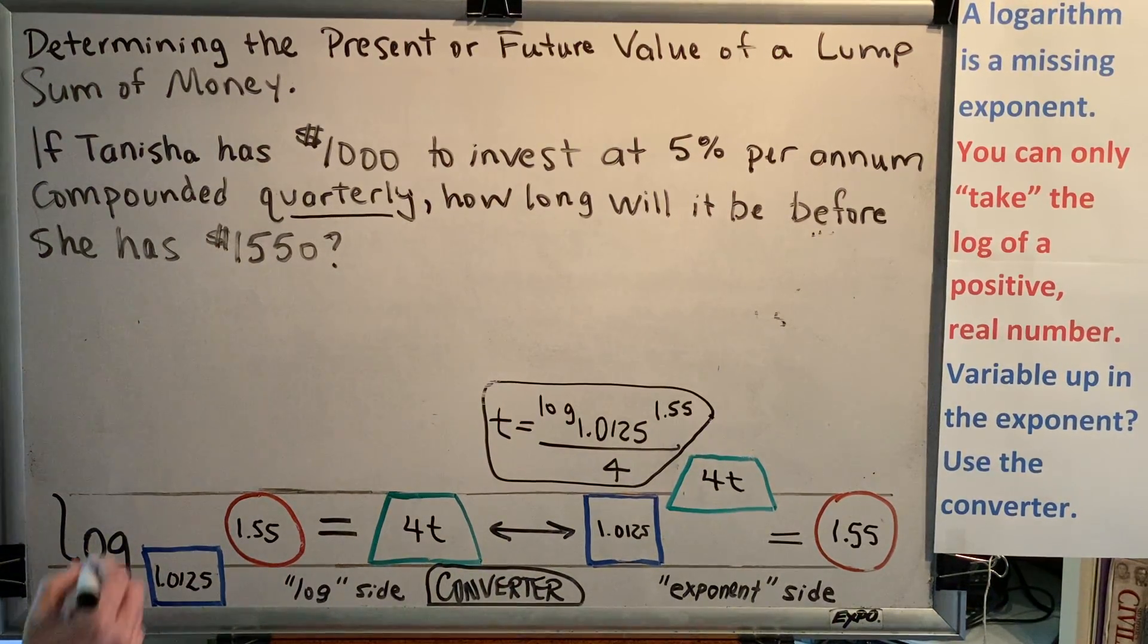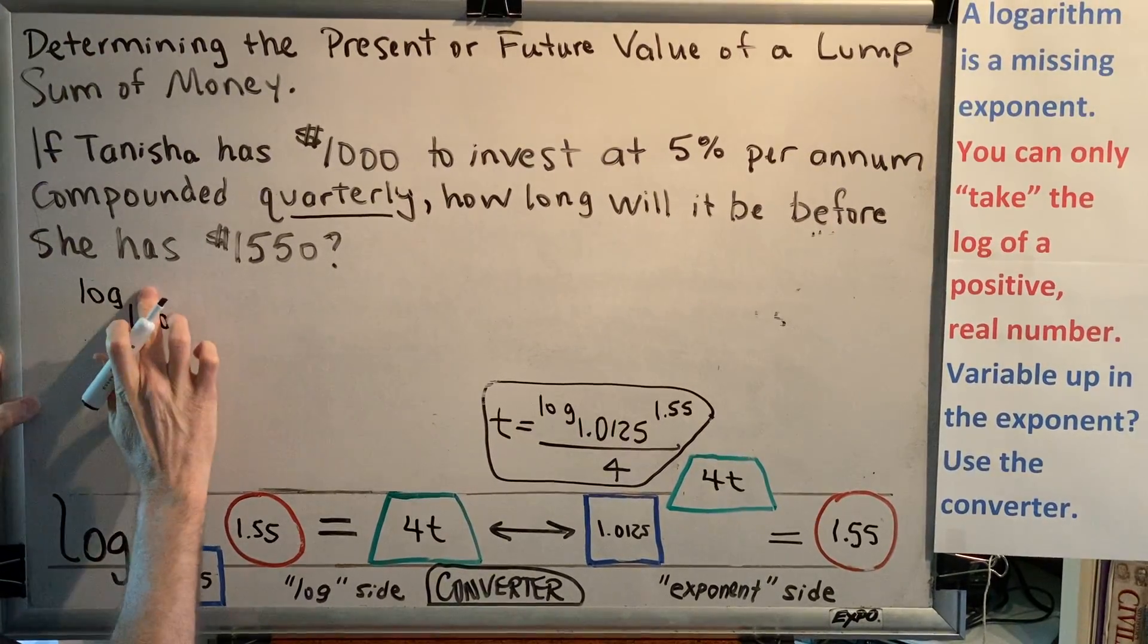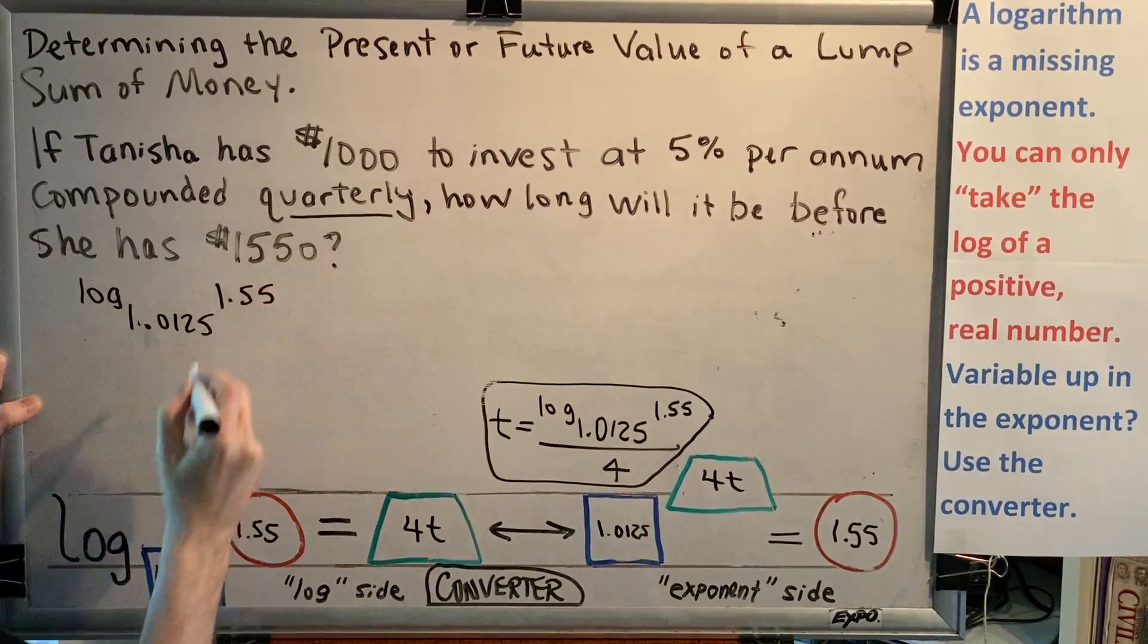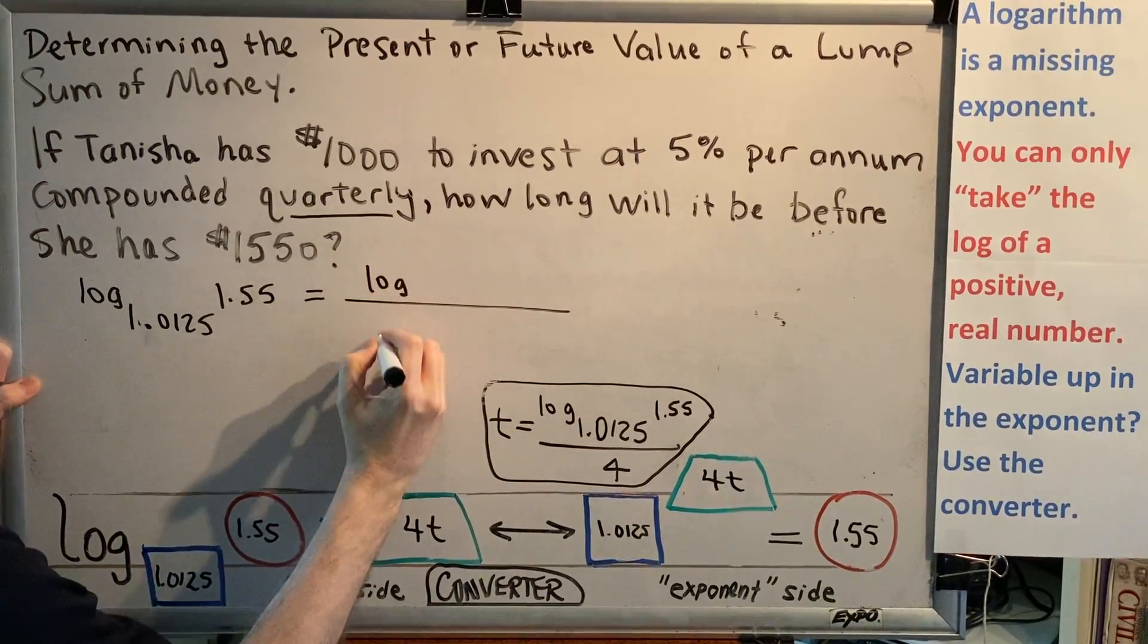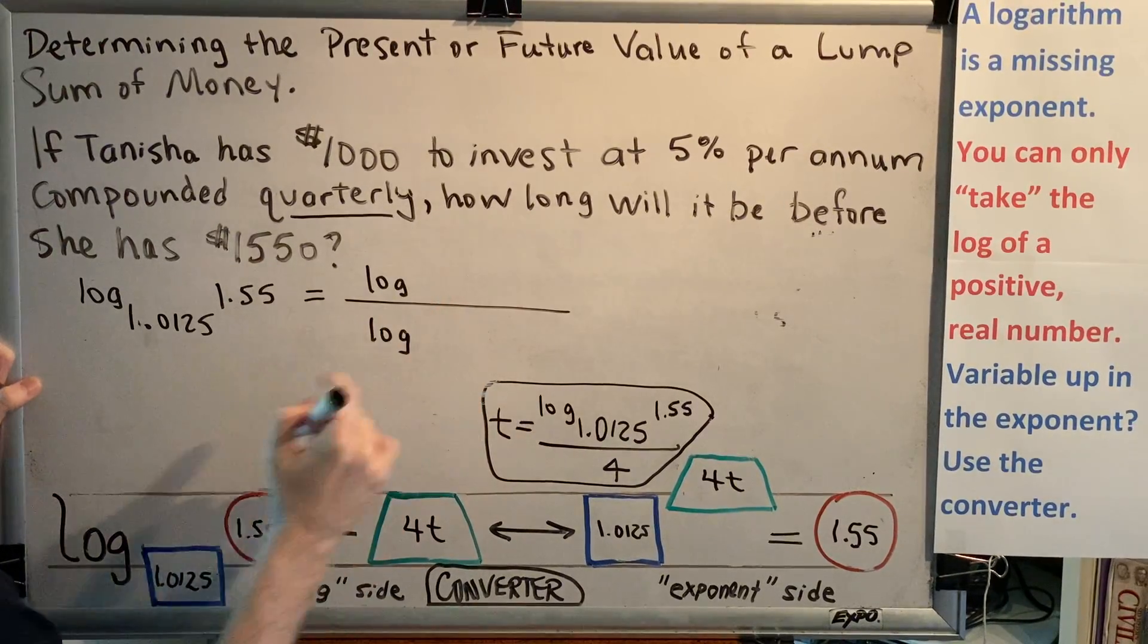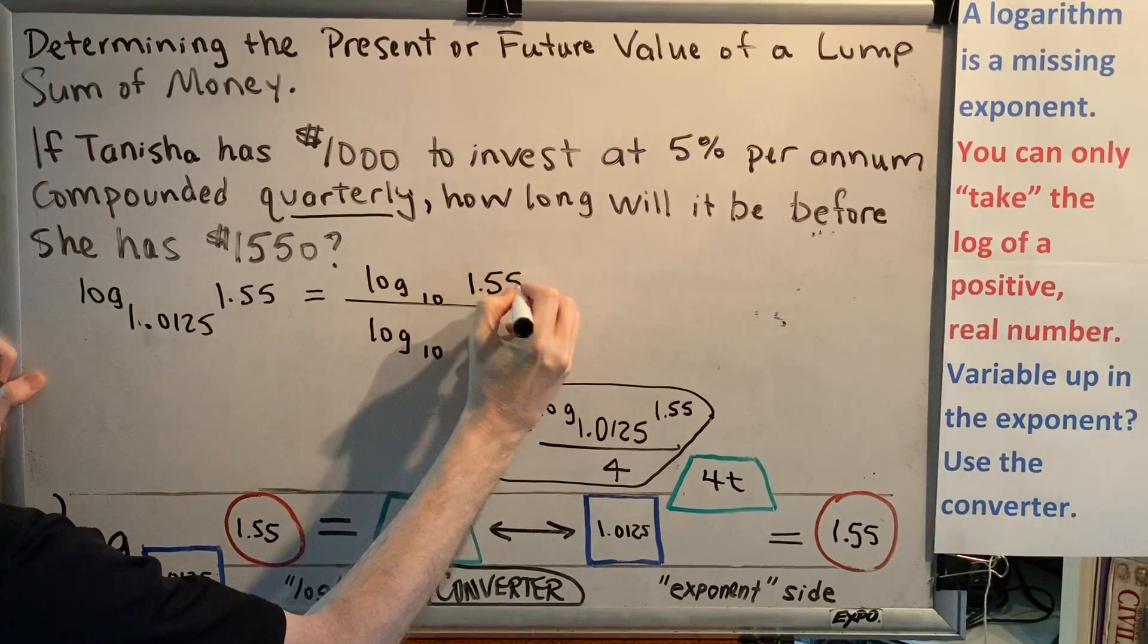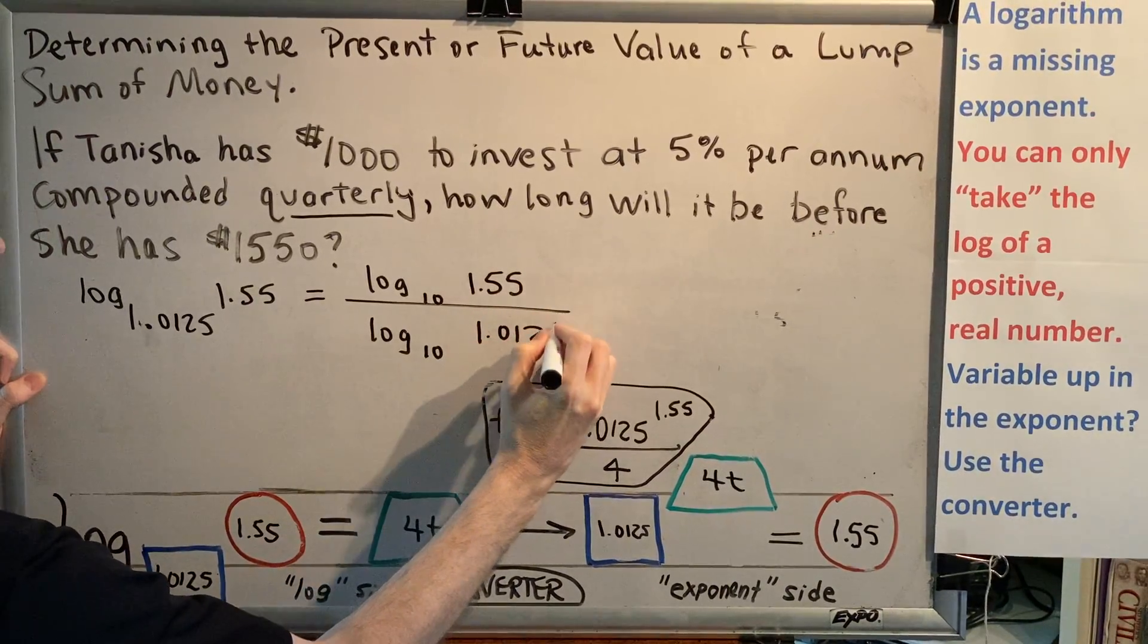So let's start with that. We know that log base 1.0125 of 1.55 can be rewritten using the change of base formula. The change of base formula says you'll have a log up top and a log down below. You get to choose the base of the log that you want to use. I choose base 10 and then the up goes up and the down goes down. So the 1.55 will go there and the 1.0125 will go there.